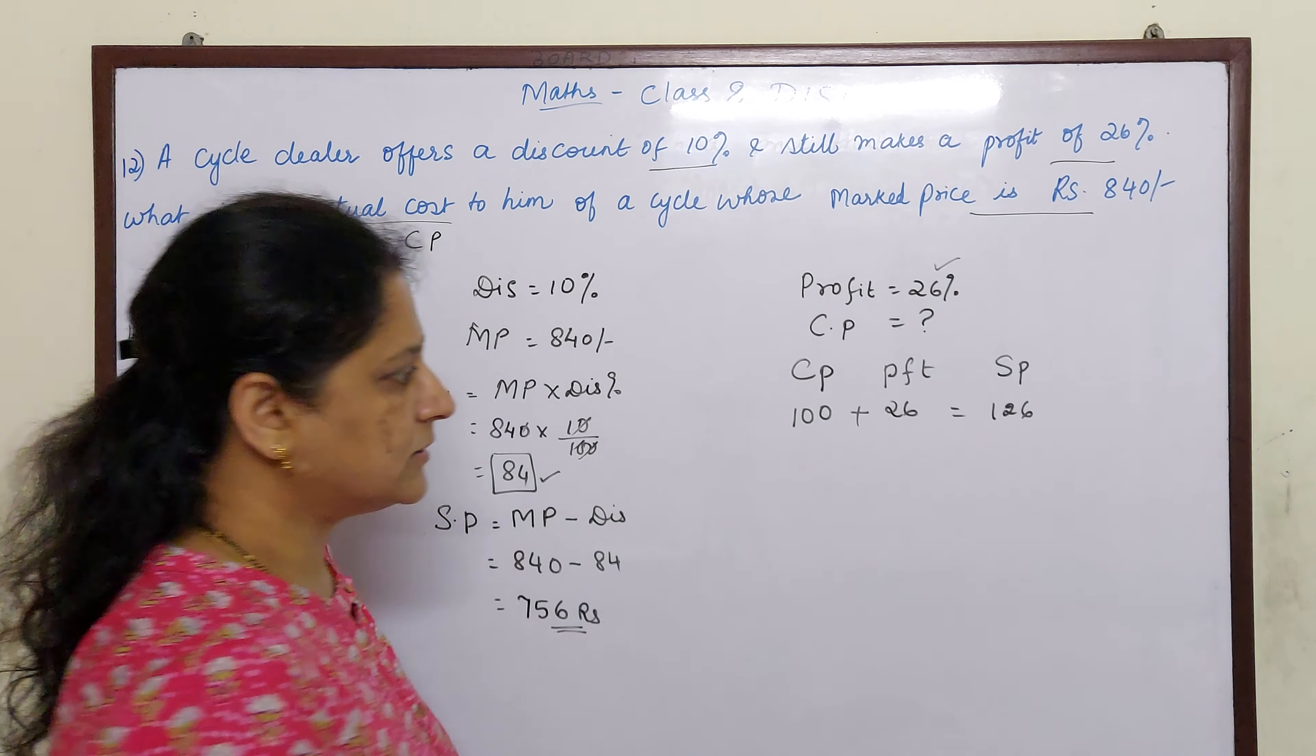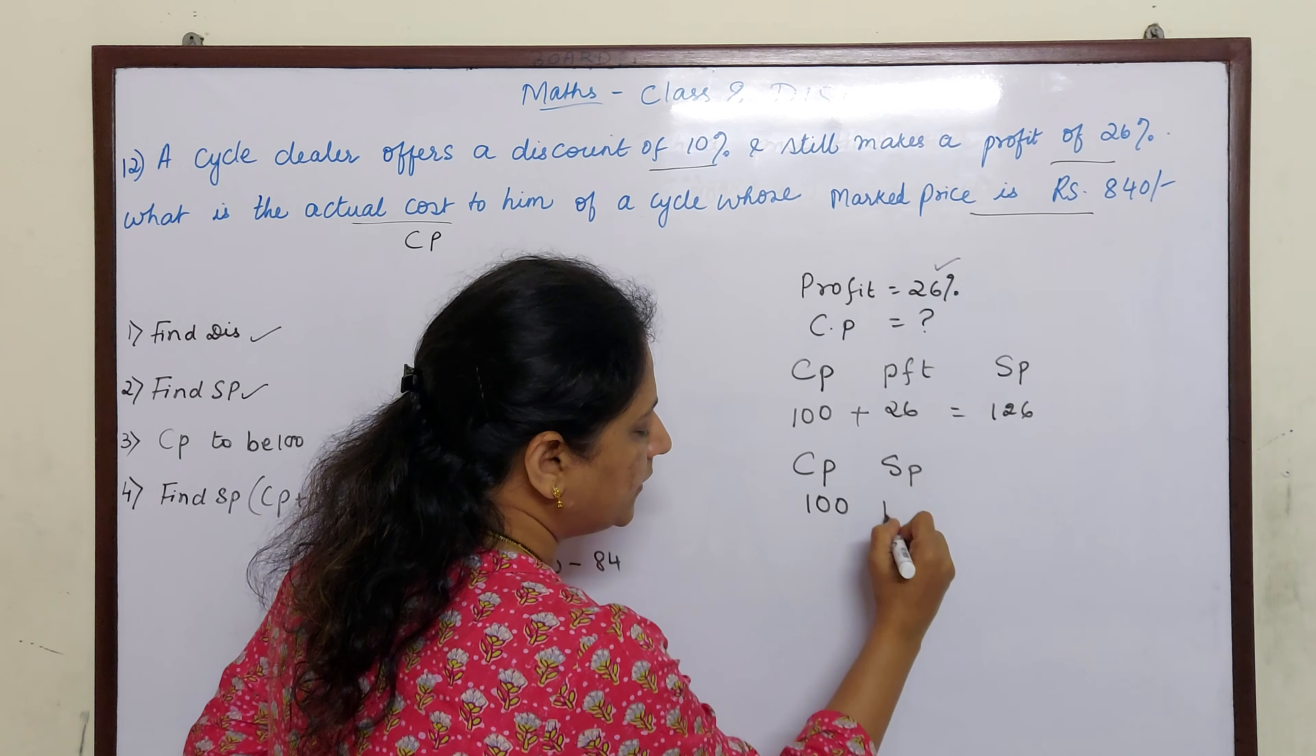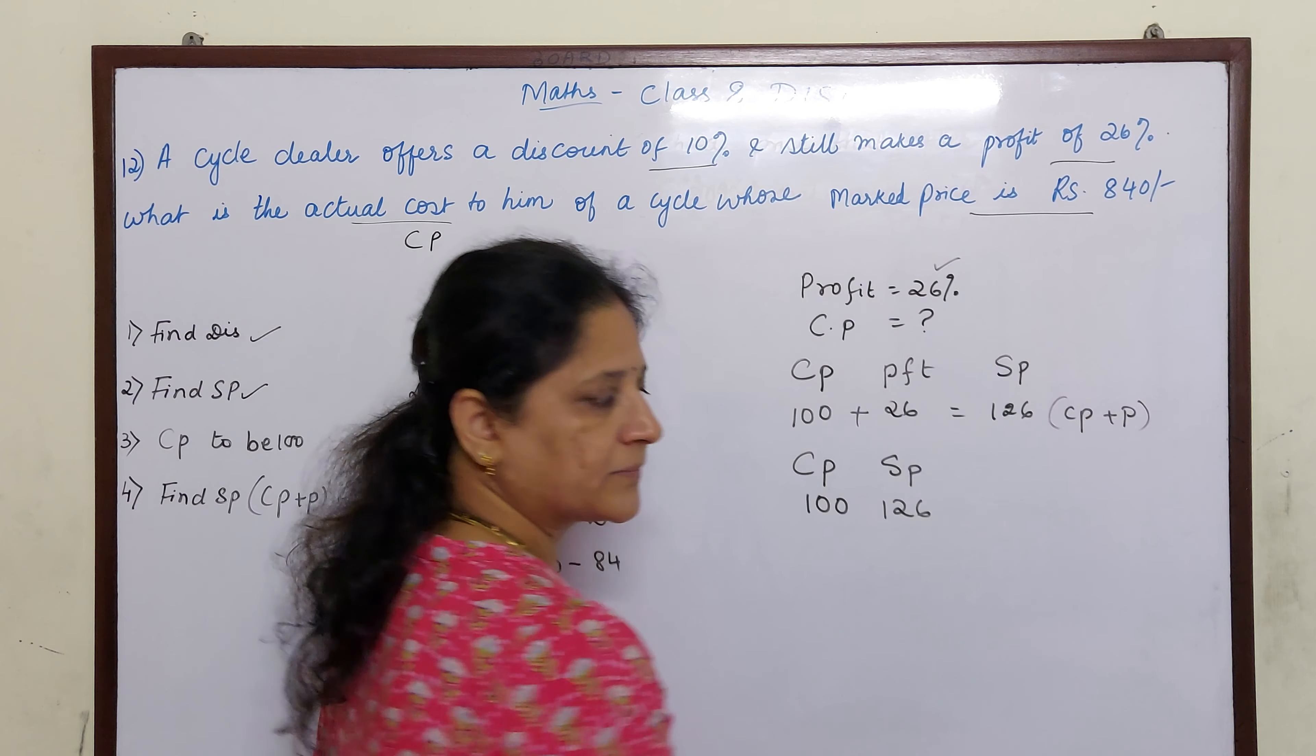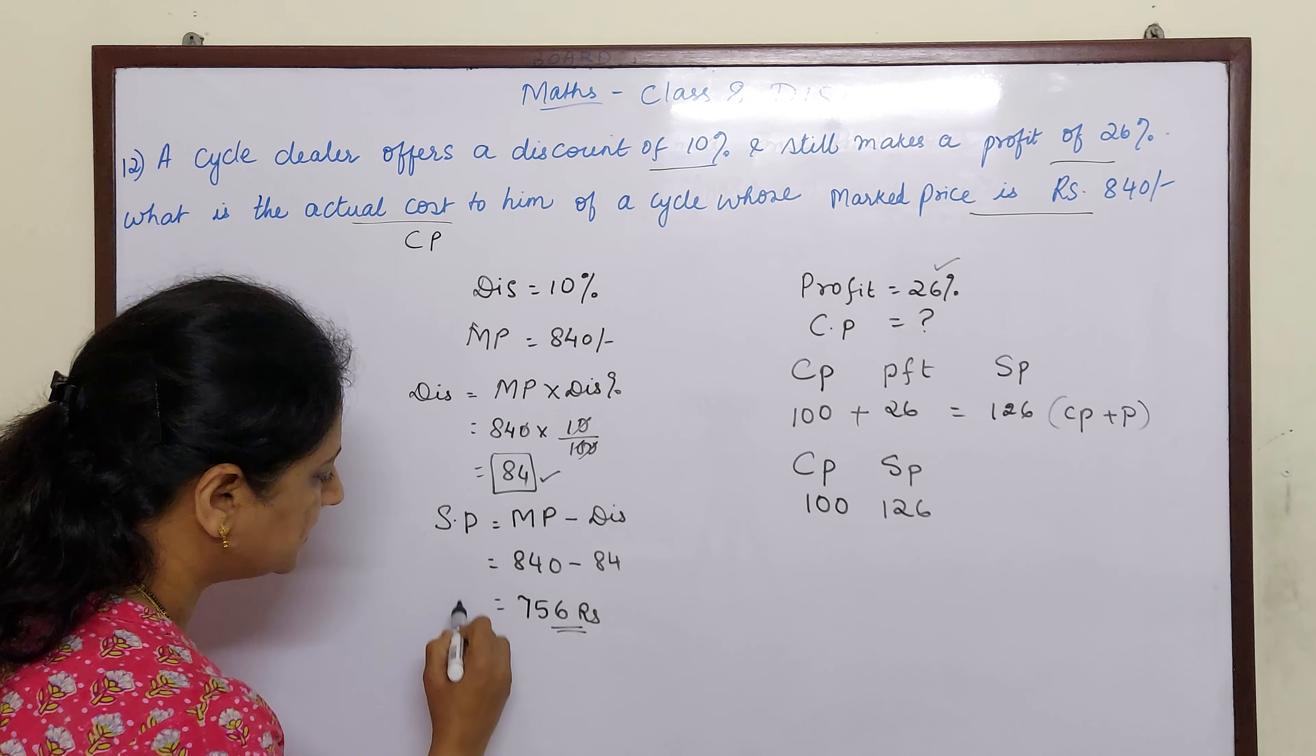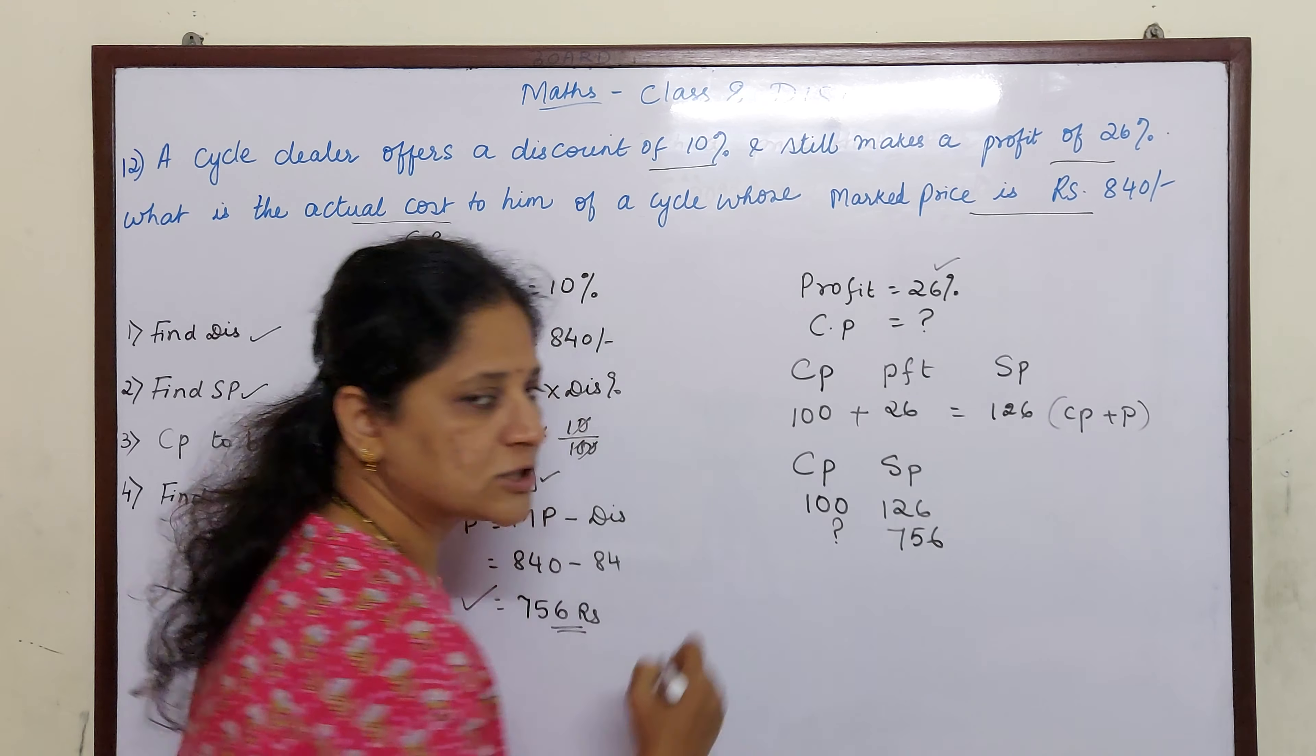So here now we will work on the assumption. When the cost price is 100, selling price is 126, because selling price is nothing but cost price plus profit, right. So when I took cost price as 100, my selling price was 126. But if the selling price is 756 for the cycle, then what will be the cost price?